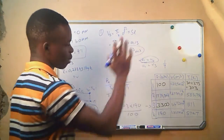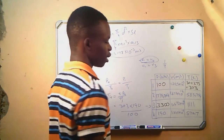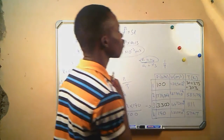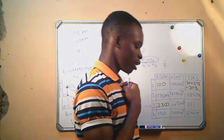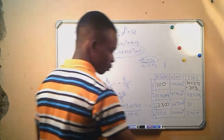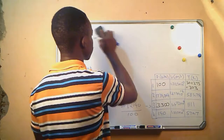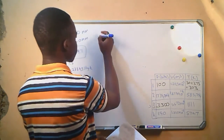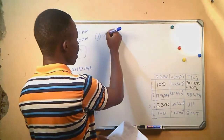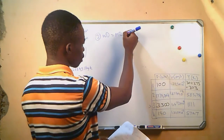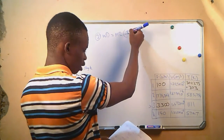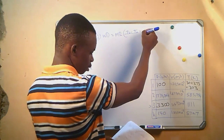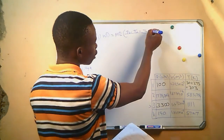We are done with question number 1. We have calculated everything requested — all values of pressure, all values of volume, and all values of temperature. We move to question number 2: calculate the work done in joules per cycle.